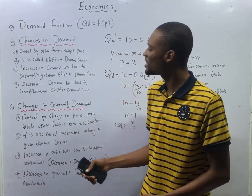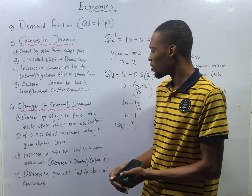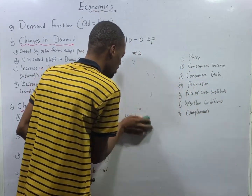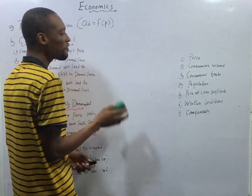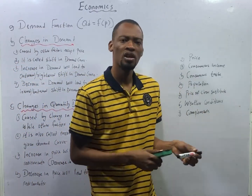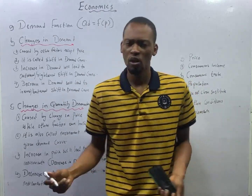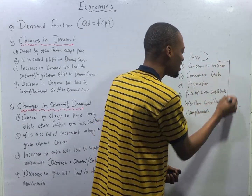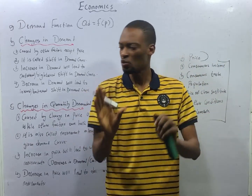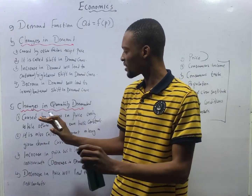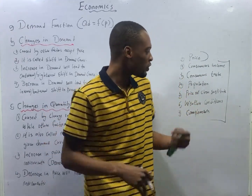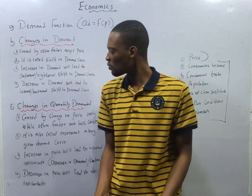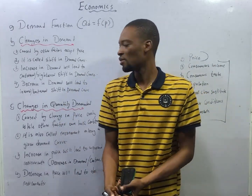Change in quantity demanded is a phenomenon caused by change in price only, while other factors are held constant. We look at what happens to demand if price alone is affected, while every other factor — consumer's income, consumer's taste, population, and the rest — we don't touch. We need to know what is caused by change in price, and that is changes in quantity demanded.